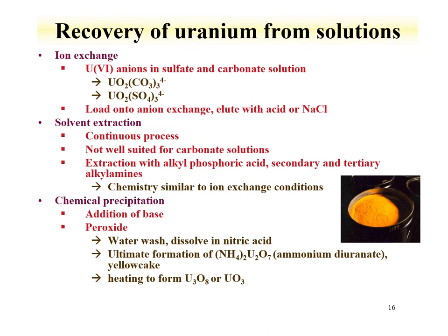Once in solution, uranium can be recovered through anion exchange, solvent extraction, or chemical precipitation. Anion exchange loads the carbonate or sulfate uranium species onto an anionic exchange resin, then elutes with weak acid or a salt solution. Solvent extraction—similar to the tributyl phosphate system explored in lab—can run continuously, though it is better suited to the acidic sulfate system than the carbonate system. Chemical precipitation uses addition of a base, peroxides, or ammonia to form ammonium diuranate, the yellow cake shown here.